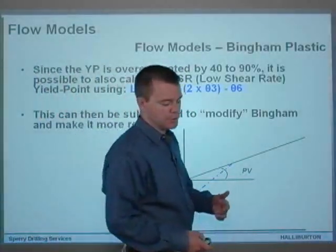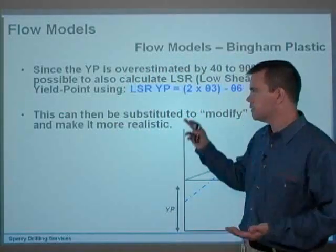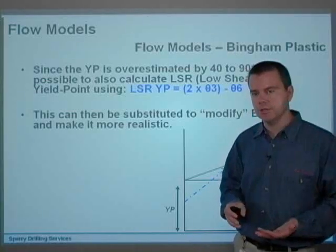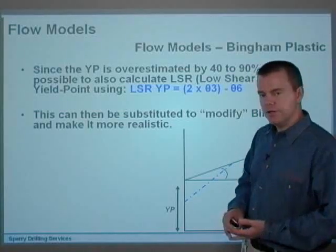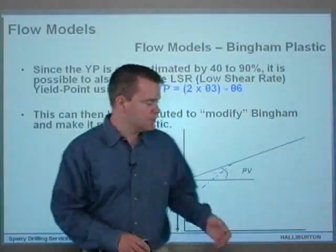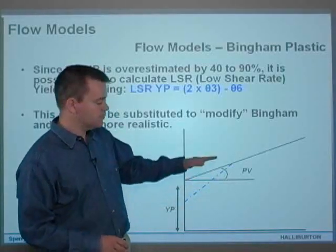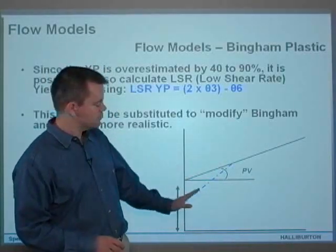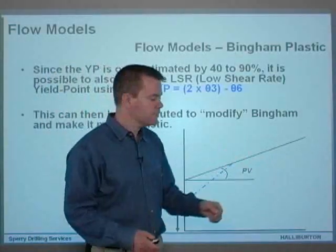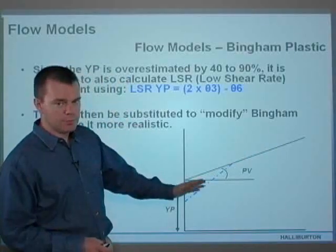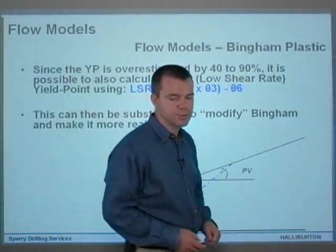So we're stuck with putting in your 300 and 600 readings, or usually the inputs that you're asked for when you're doing Bingham plastic is just PV and YP. You're never asked for a low shear rate YP. So what you end up with is you never actually end up with this line-to-line relationship, which is a reasonable approximation of annular hydraulics. It certainly is going to bring it down from a 90% overestimate to something a little bit more realistic. It's still not a curve, it's a line-to-line relationship. So even if we did have the possibility of doing that, it still wouldn't be accurate, but we don't even have that possibility in most software.